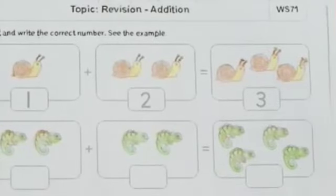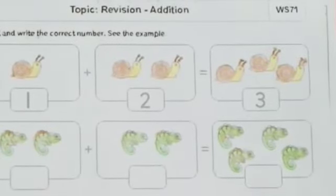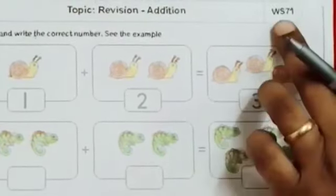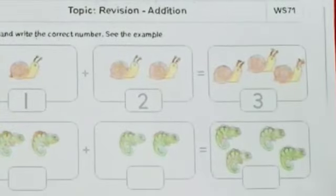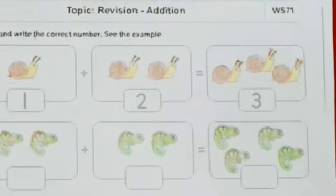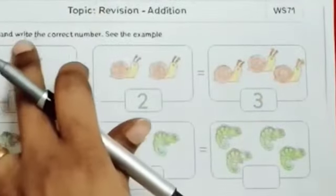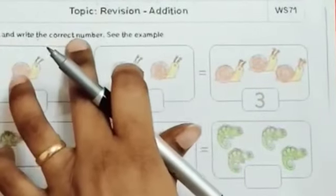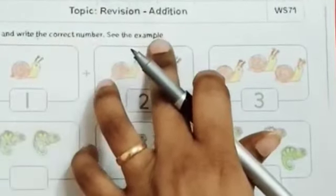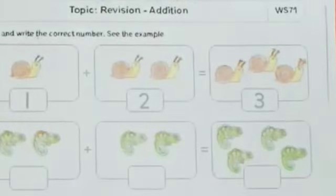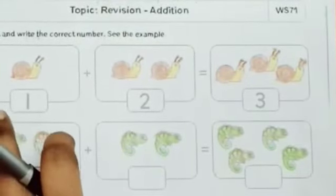Now children, we will begin with our activity. Take out worksheet number 71, page number 75 — revision, addition. Count and write the correct number. See the example. Now children, we will see the first sum as an example.